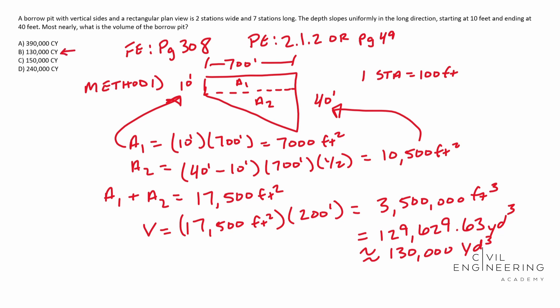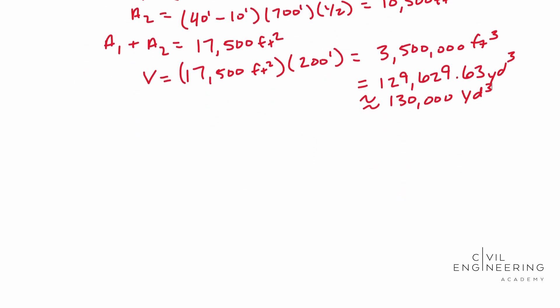So now for the second method, we're going to go ahead and scroll down a little bit for method two. We're going to be using the formula in the FE and the PE handbook. So that is V equals A1 plus A2 over two times your length.